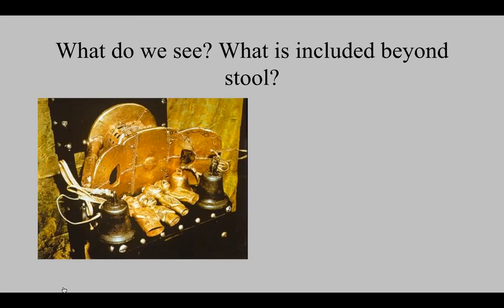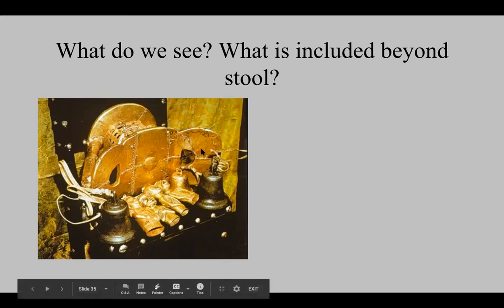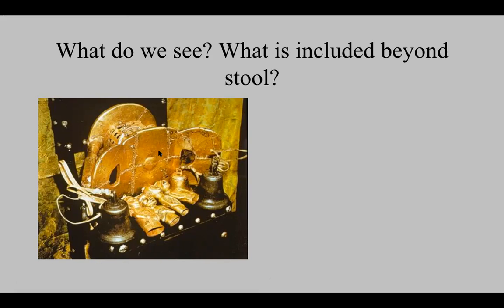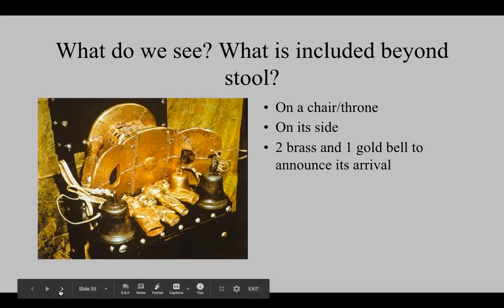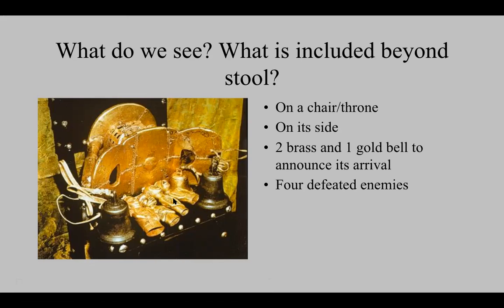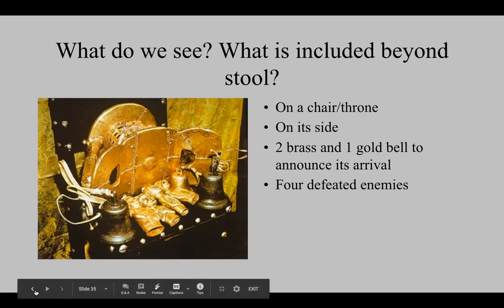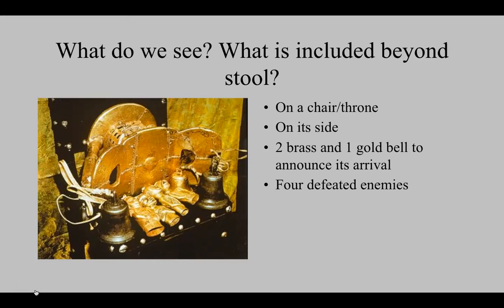You can't sit on it. This is actually sitting on its side — the part with the handle is where the bottom would rest. So this stool actually sits on its own chair, always displayed on its side so that no one can ever sit on it. It comes with two brass and one gold bell so people can hear it coming. When it's transported, those bells announce its arrival. And there are four little images — those represent defeated enemies. The golden stool is covered in gold.